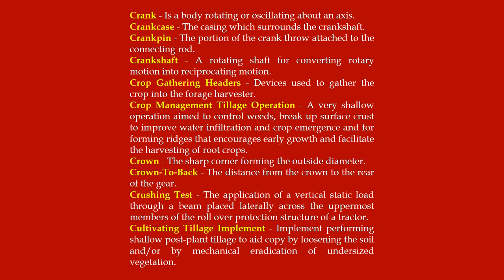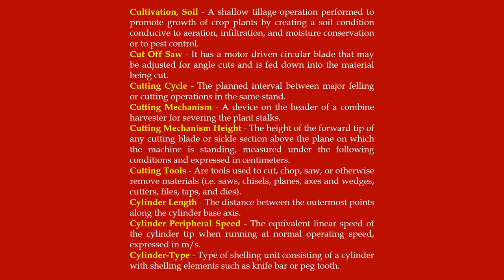Cultivating tillage implement: implement performing shallow post-plant tillage to aid crops by loosening the soil and/or by mechanical eradication of undersized vegetation. Soil cultivation: a shallow tillage operation performed to promote growth of crop plants by creating a soil condition conducive to aeration.